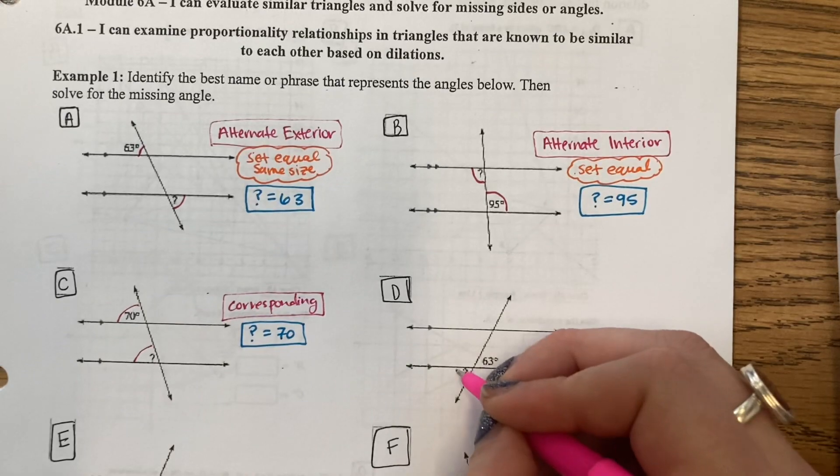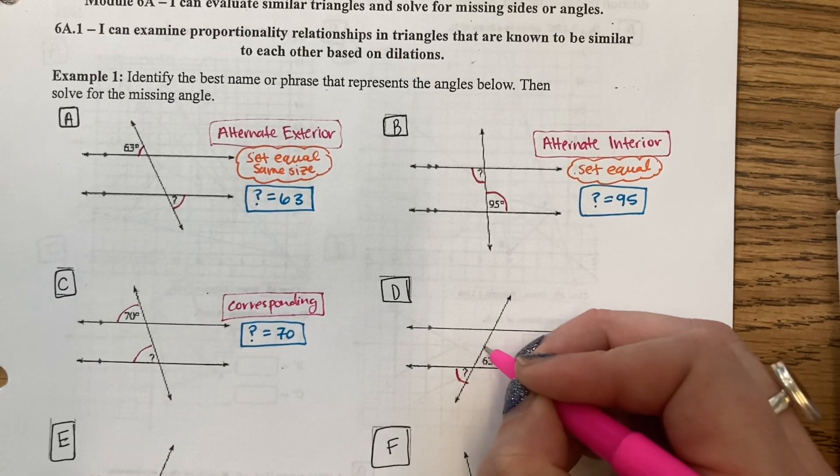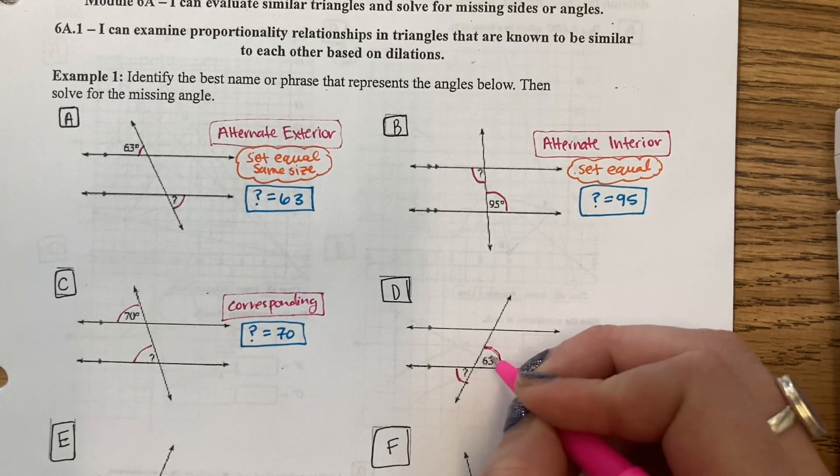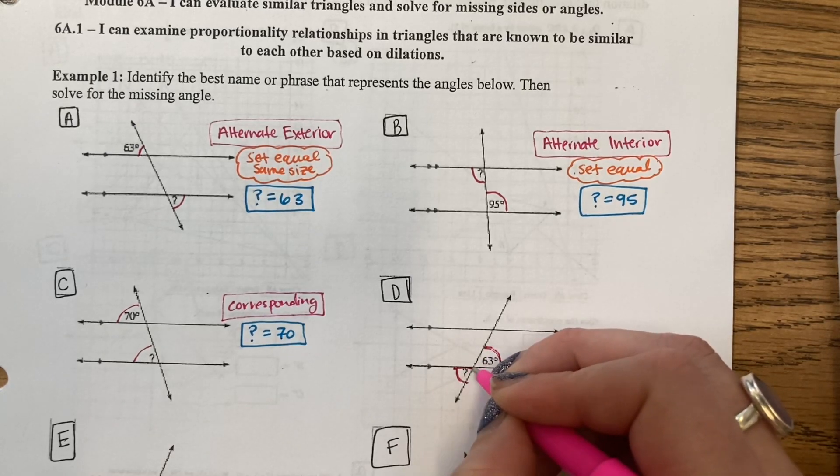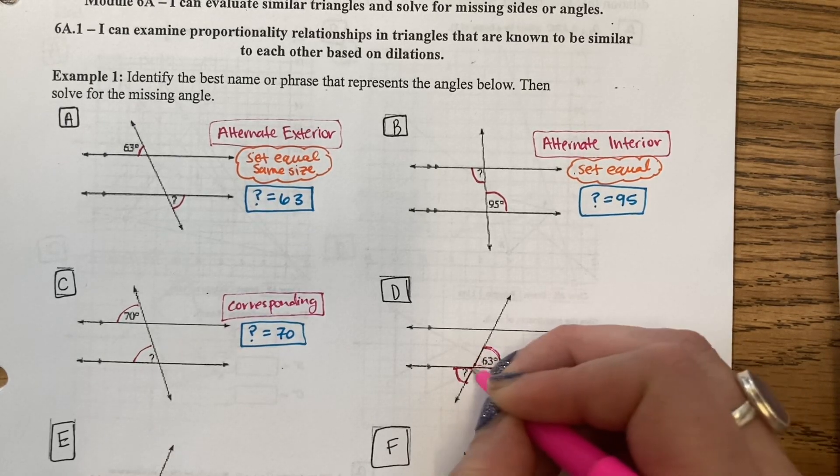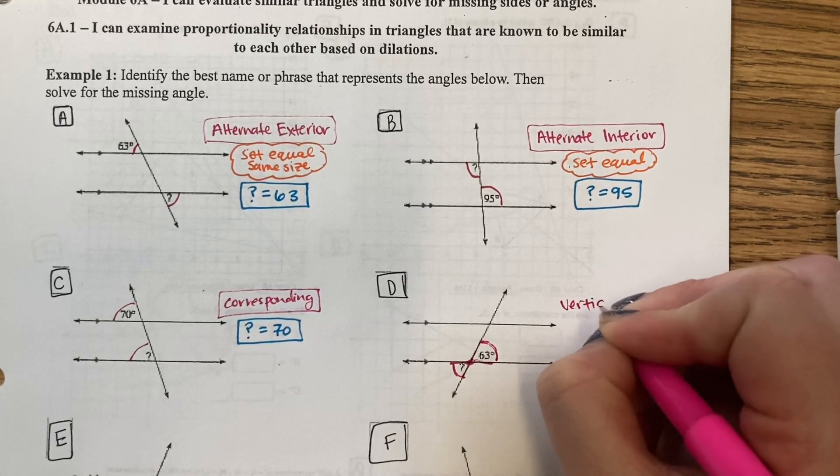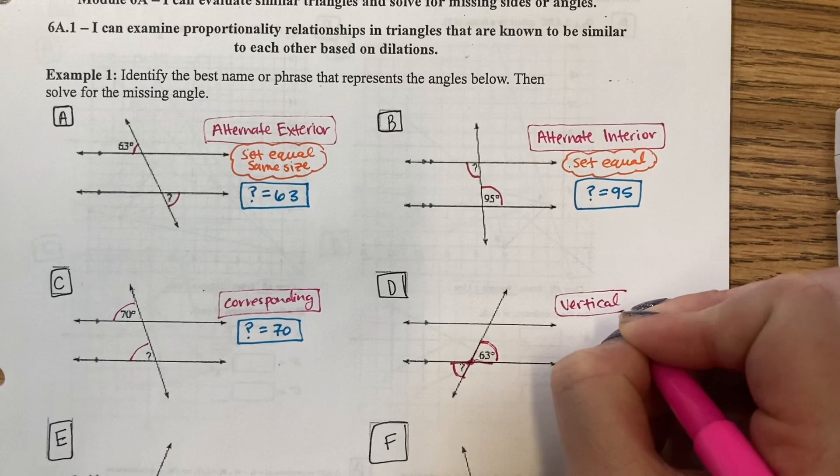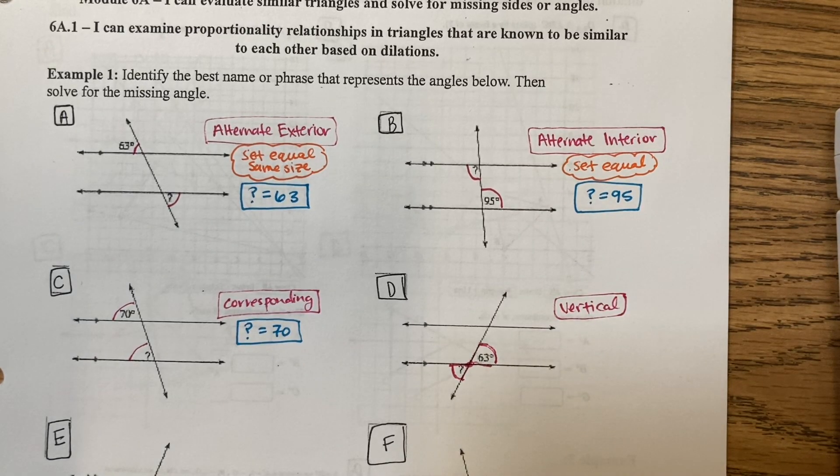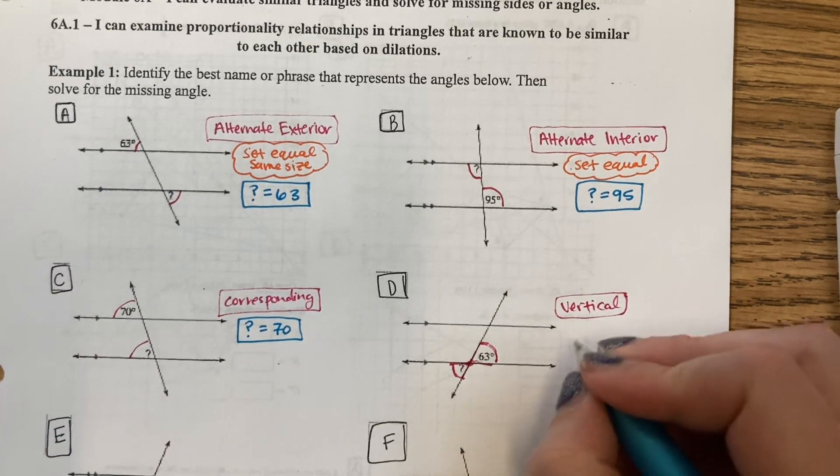Question D. I'm given question mark and 63. These are vertical. If it helps, think of the V's, kind of like two V's and the V's touch in the center. They are vertical. They are also the same size, so we will set them equal.